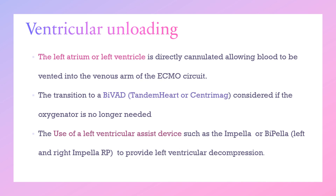For ventricular unloading, the left atrium or left ventricle is directly cannulated, allowing blood to be vented into the venous arm of the circuit. We can also do transition to BiVAD, TandemHeart, or similar devices if an oxygenator is not needed. The use of left ventricular assist devices like Impella or bi-pella on both left and right sides, along with Impella RP for the right side, can also provide left ventricular decompression.